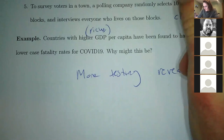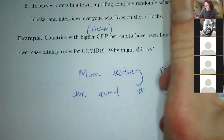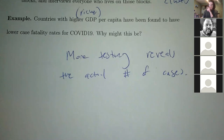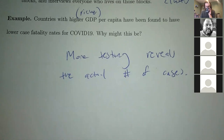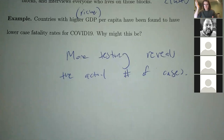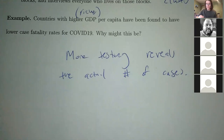More testing reveals the actual number of cases. The more cases you have, your deaths aren't going to go up when you test more — people who are dying are dying and they get tested. But the people who aren't dying are the ones you need to understand to get the actual case fatality rate. It could also be that in wealthier countries people can work remotely, while in poorer countries people can't, so the virus spreads more and they might have worse medical care.